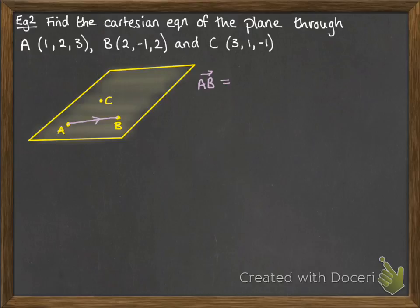So first of all, we're going to find AB and AC. And again, that's just by doing the position vectors subtracted from each other. So B minus A and C minus A. Now we have the two vectors that lie on the plane.